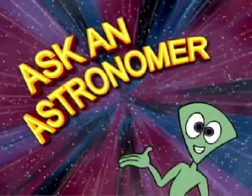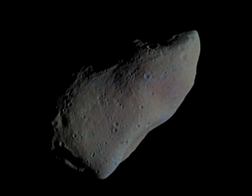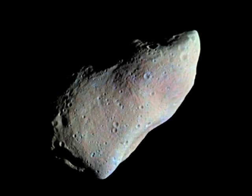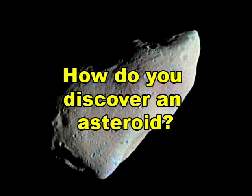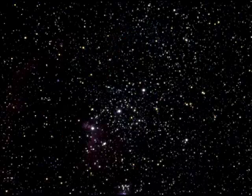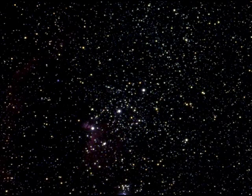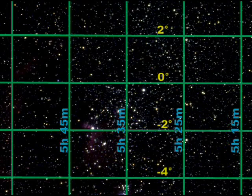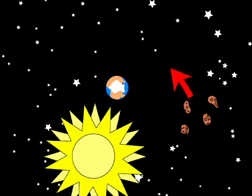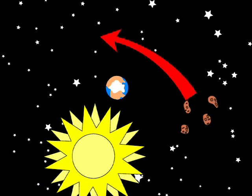Ask an Astronomer: How do you discover an asteroid? For an astronomer, stars and galaxies are easy to find in the sky — they're always at the same latitude and longitude. Asteroids, though, move across the sky at different rates.